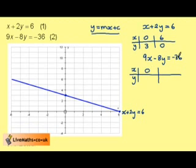If we take x is 0, we get minus 8y is minus 36, which tells us that y is 4.5. And if we took y equals 0, we have 9x equals minus 36, which is x is minus 4.